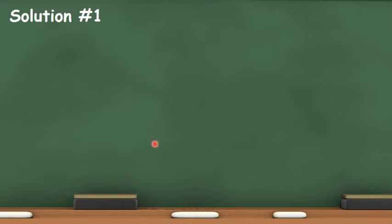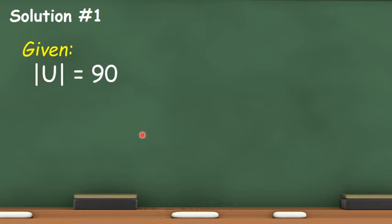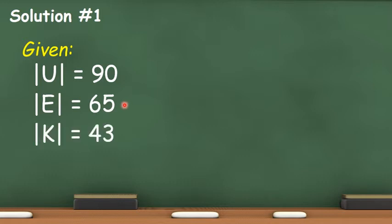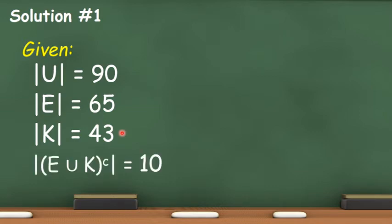For our first solution, the given values are: the cardinality of U is 90 since there are 90 persons in the problem. The cardinality of E is 65. The cardinality of K is 43. And the cardinality of the complement of E union K is 10, since according to the problem, there are 10 persons who do not speak English nor Korean.